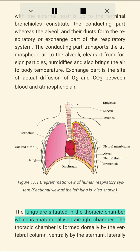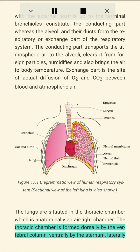The lungs are situated in the thoracic chamber, which is anatomically an airtight chamber. The thoracic chamber is formed dorsally by the vertebral column, ventrally by the sternum, laterally by the ribs, and on the lower side by the dome-shaped diaphragm.